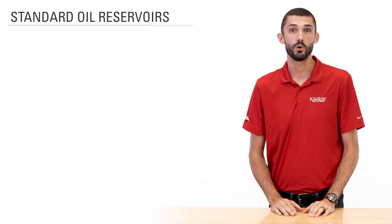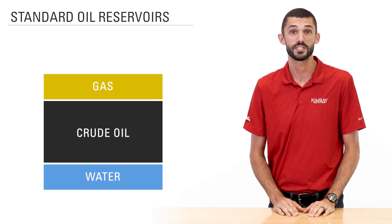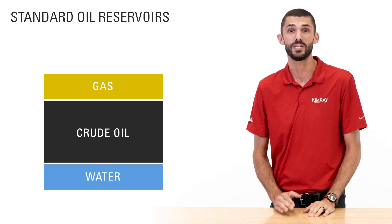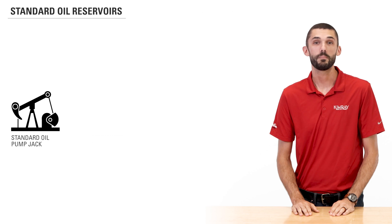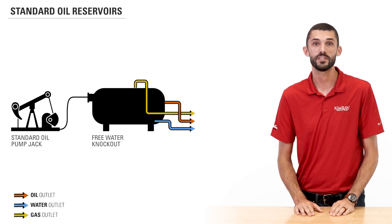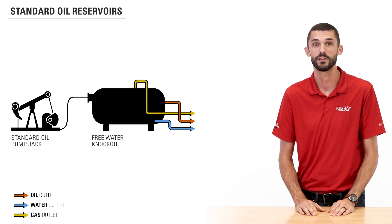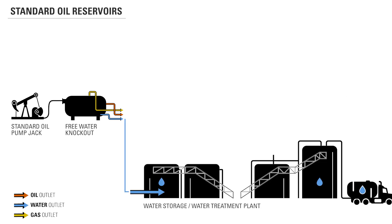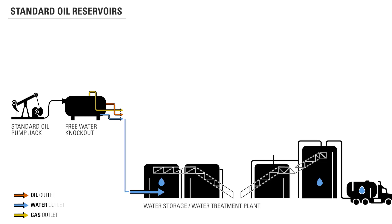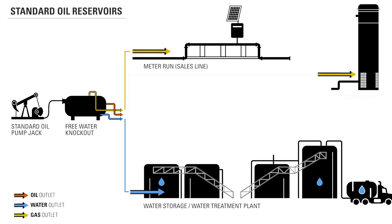Standard oil reservoirs contain mostly crude oil with minimal amounts of water and gas. They will generally have two stages of separation. The first stage happens in a free water knockout, where retention time allows the natural specific gravities to start separating oil, water, and gas from each other. As they exit the vessel, the water is piped to storage for disposal, and the gas is piped to either a sales line via a meter run or a combustion line.